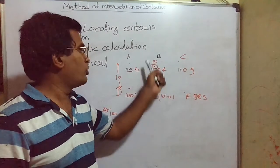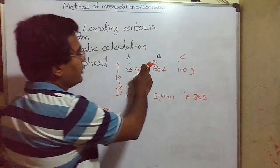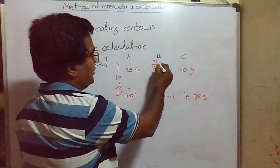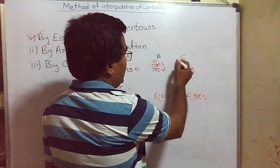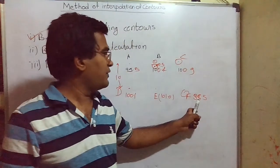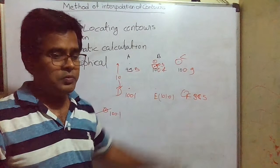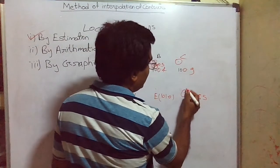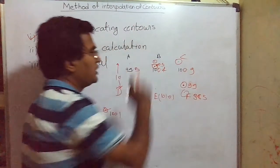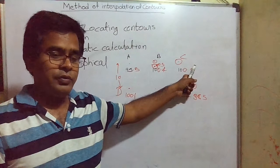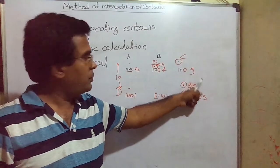We are just estimating the location of that point — not doing any calculation, not using any graphical method. For example, if this is 100.4 and this is 101, then 100.5 should lie near 100.4. Now suppose one point is 98.5 and another is 100.9, with point C having RL 100.9. There is a difference of 2.4 meters between these two points. If I want the contour of RL 99, it should lie near 98.5 — I can mark it near the 98.5 point. By estimation, the point of RL 99 will lie near the point of 98.5.